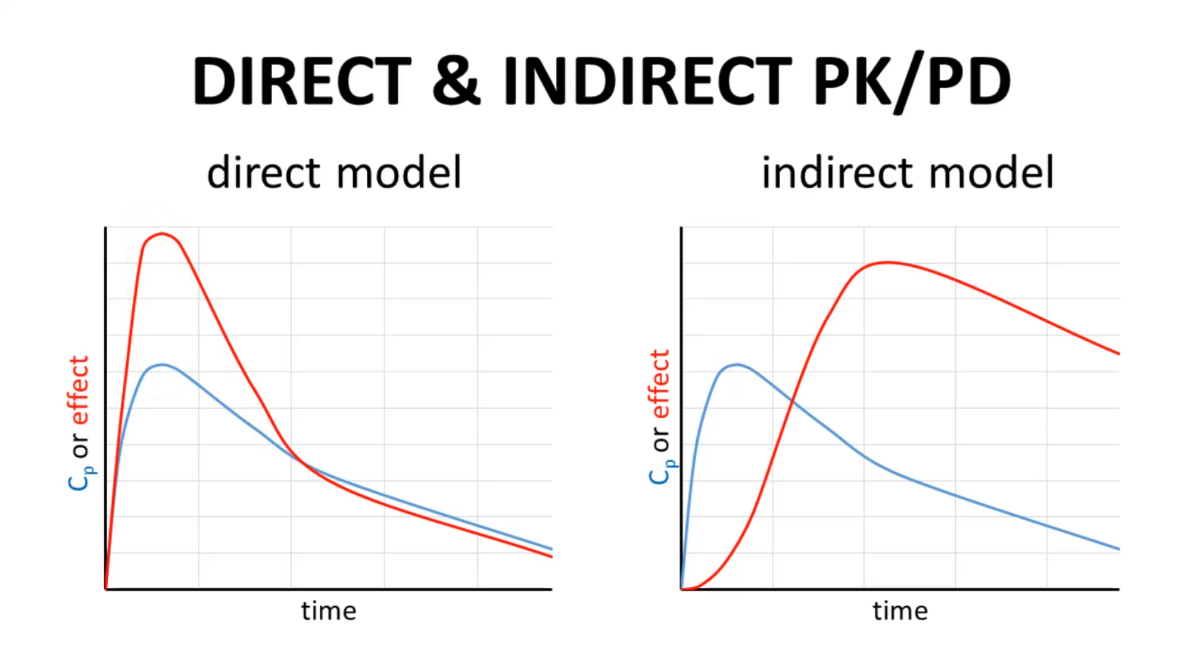To the right is the indirect model. Note that the peaks do not line up at the same time. This graph is representative. Normally CP reaches its peak first and then the effect curve peaks at some later time.